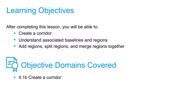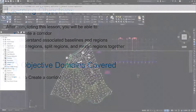In this drawing, we're going to create our first basic corridor. While creating it, we're going to discuss baselines and regions associated with our corridor. We're also going to discuss how to add additional regions, split regions, and merge regions together.